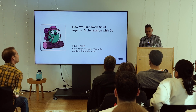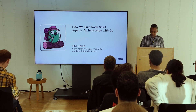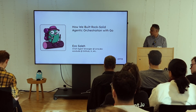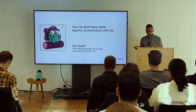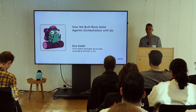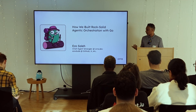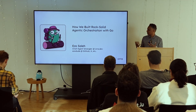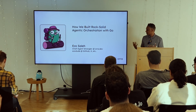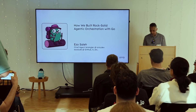My name is Izo, and I'm here to talk to you today about how we built rock solid agentic orchestration with Go. I work on this product called Aura, and it's a development toolkit to help developers build resilient AI workflows. We obviously use Go, and I'm going to go through the story of how we built some of the core features of that product, and I'll explain some of the cons and adventures we had while doing it.